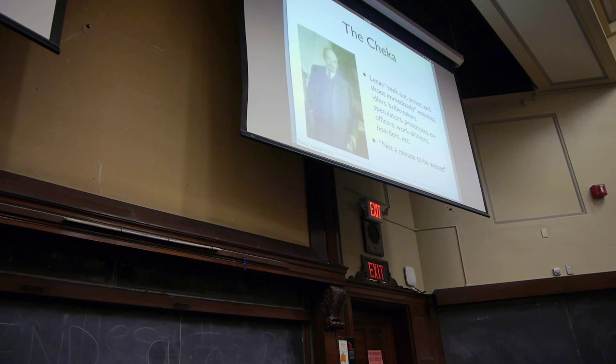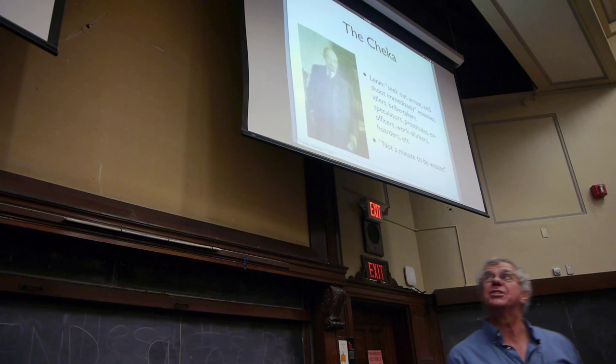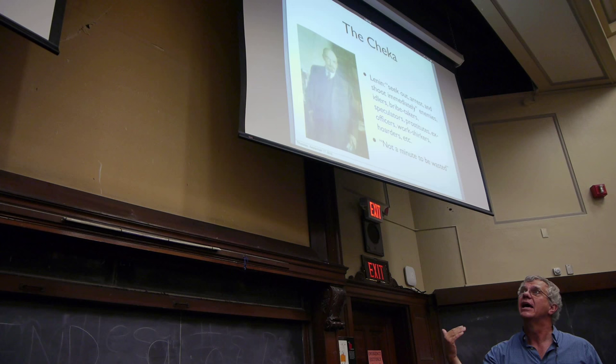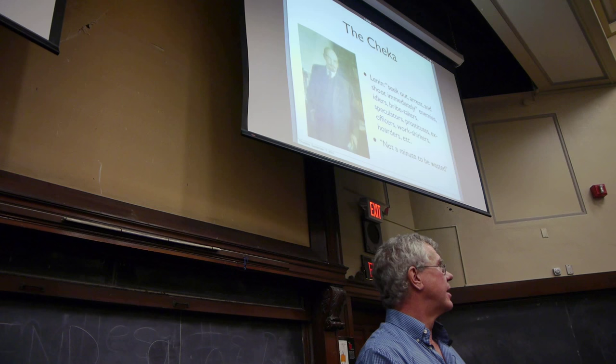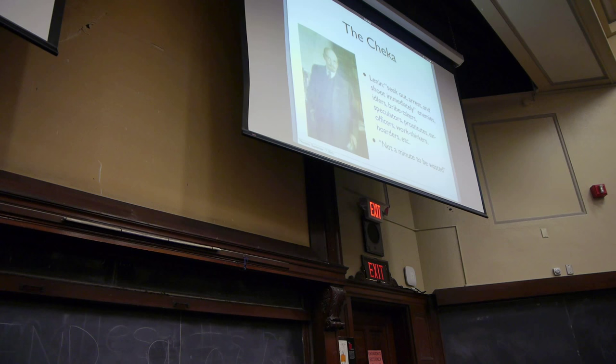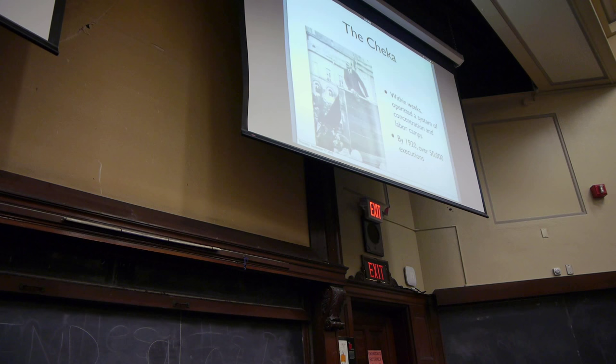Lenin said, we must seek out, arrest, and shoot immediately. Who? Enemies, idlers, bribe-takers, speculators, prostitutes, ex-officers, work-shirkers, hoarders, and so on. Not a minute to be wasted on them. Who is hoarding things? What does it mean to be a shirker? I don't know. These were vague terms introduced precisely to let the secret police destroy anyone they wanted. And so, within weeks, there was a system of concentration and labor camps. By 1920, 50,000 executions a year. As you can see, the leadership here was quite bloodthirsty. Let there be floods of the blood of the bourgeoisie. He said, the revolutionary courts must shoot. And Alexander Solzhenitsyn listed targets. Not just the factory owners, the people who would be obvious owners of the means of production, but homeowners, high school teachers, priests, monks, nuns, pacifists, trade union officials. All of these people were to be executed on sight.